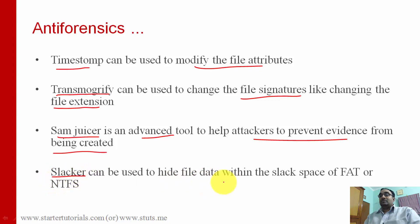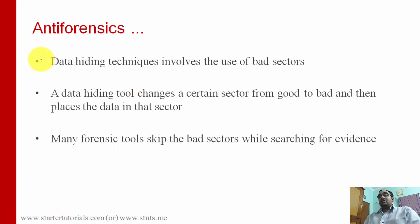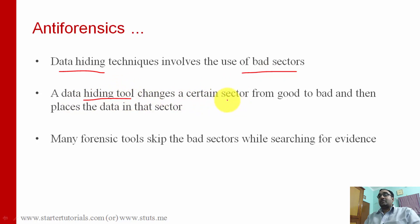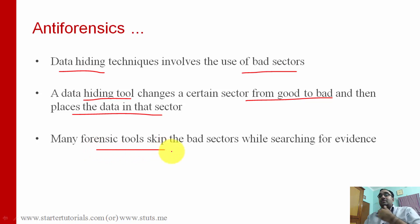Slacker can be used to hide file data within the slack space of the file system. These are all different tools that are part of the Metasploit anti-forensic investigation toolkit. The data hiding technique involves the use of bad sectors on the disk — data hiding tools change the status of a sector from good to bad, then place the data in that sector. When forensic investigators use forensic tools, the tool skips the bad sector containing the data, so they are not able to gather evidence.